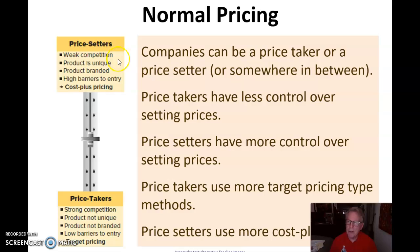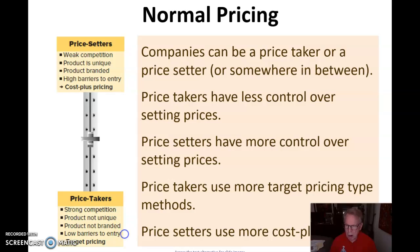Price setters operate where there's weak competition, the product is unique, the product is branded, and there are high barriers to entry — they use cost-plus pricing. Price takers face strong competition, the product is not unique, the product is not branded, and there are low barriers to entry — they use target pricing.